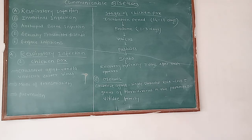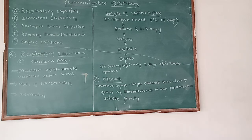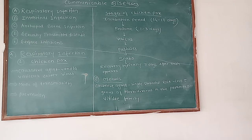The period of communicability extends from the first symptoms to the disappearance of crusts and scabs — a period of about 2–3 weeks. Even after the scabs have disappeared, if we come into contact with an infected person within 2–3 weeks, we can still get the disease. The disease is most communicable during the early stages when the virus has entered the body during the incubation period.